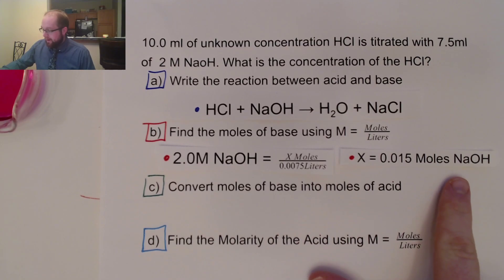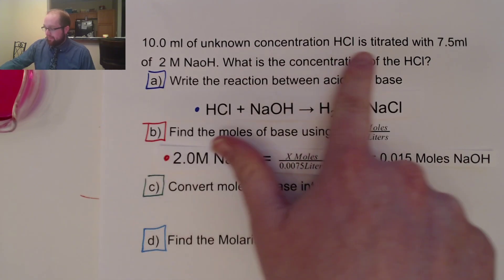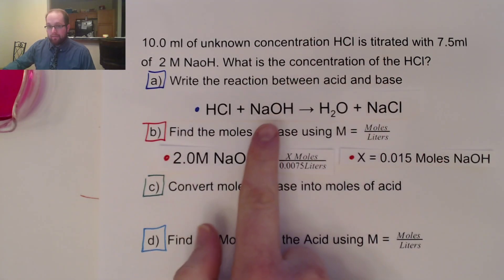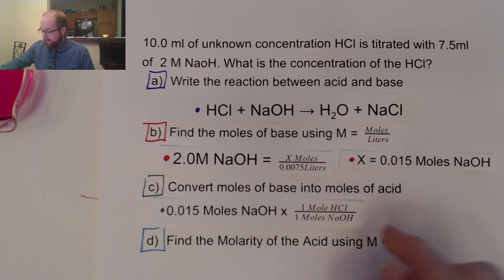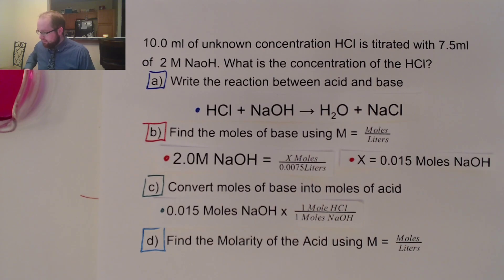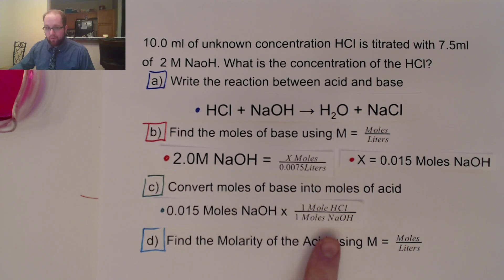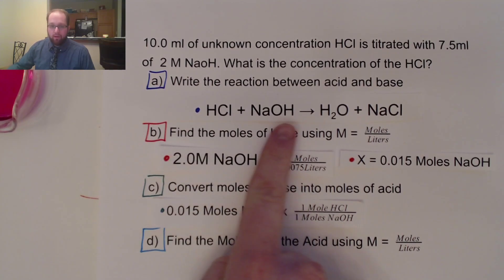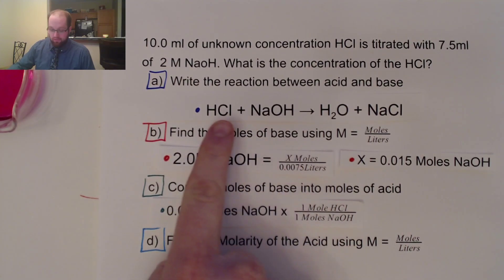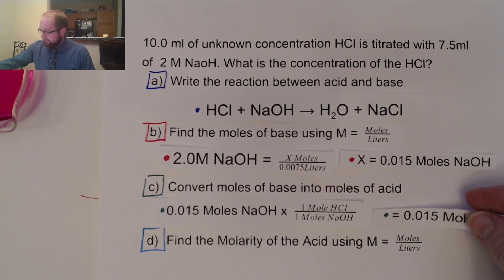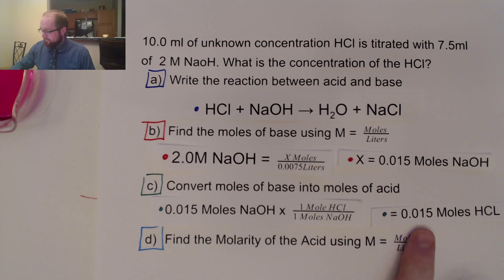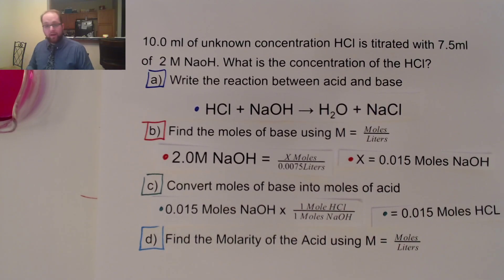Now, I don't want my moles of NaOH — I'm trying to find information about my HCl. Thankfully, we have this nice balanced reaction, so I can convert my moles of NaOH into moles of HCl, with it in this case being a 1-to-1 ratio. Not all reactions will have a 1-to-1 ratio, so you will need to consider that as part of your problem. In this case, we're going to end up with the same amount of moles of NaOH and the same amount of moles of HCl.